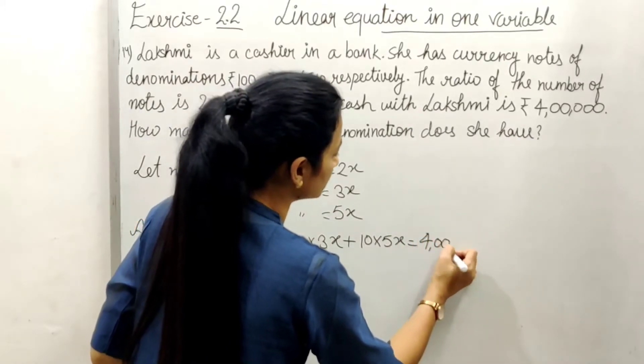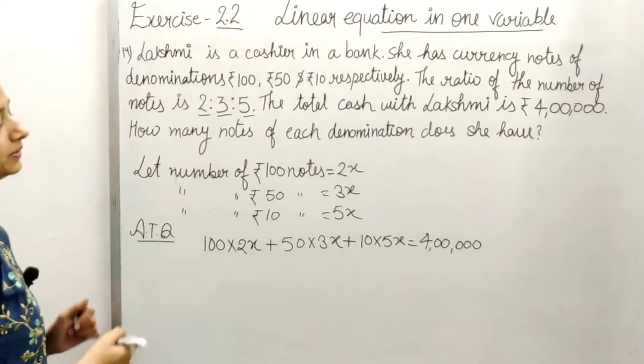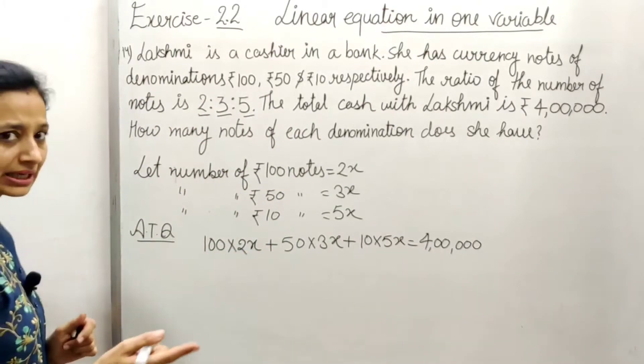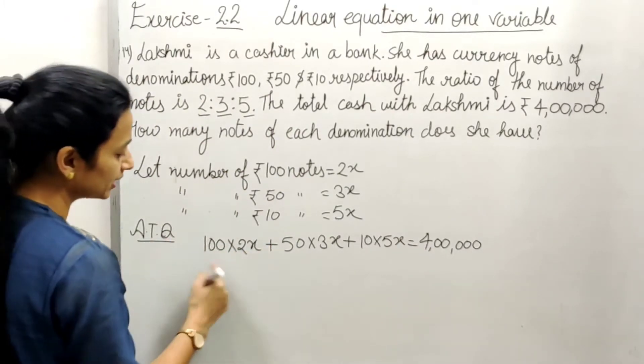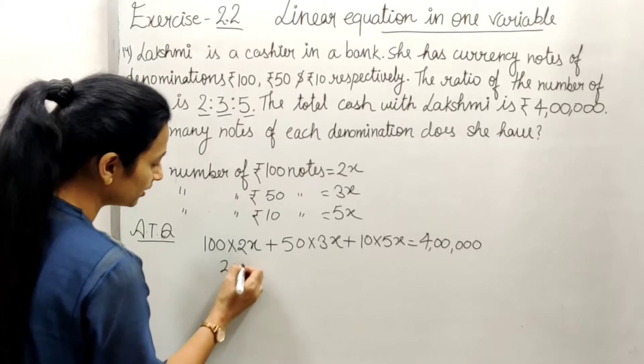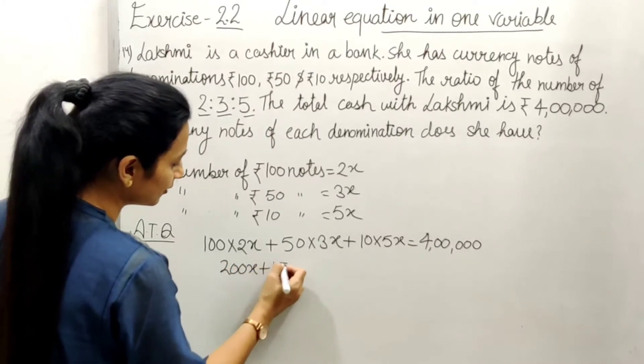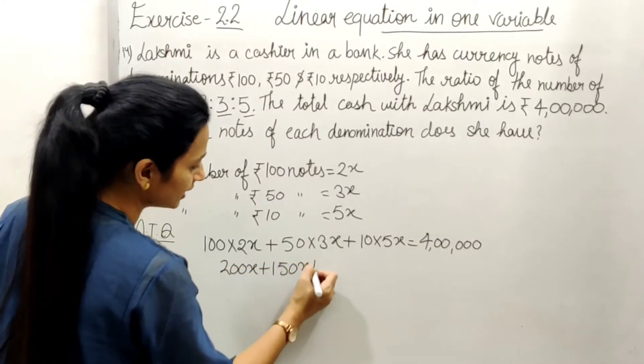Now we have our equation. Let's solve it. This becomes 200x plus 150x plus 50x equals 4,00,000.